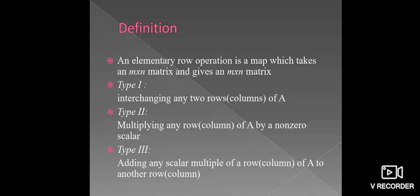First, see the definition. An elementary row operation is a map which takes an m×n matrix and gives an m×n matrix.